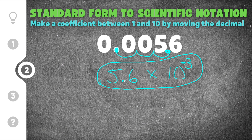5.6 works as a coefficient because it's between 1 and 10. The exponent is negative because the decimal had to move to the right. In the previous problem it moved to the left, so the exponent was positive; in this problem it moves to the right, so the exponent is negative.